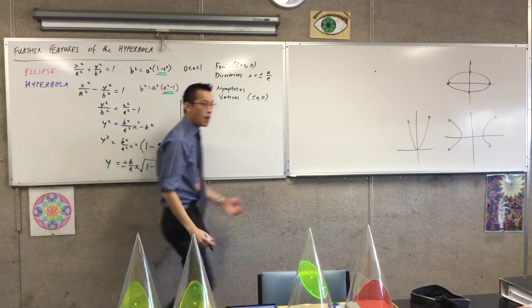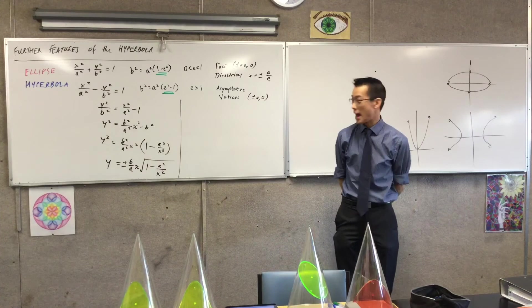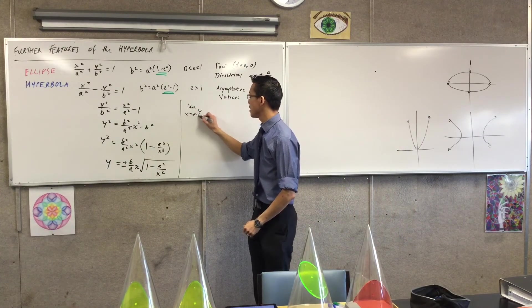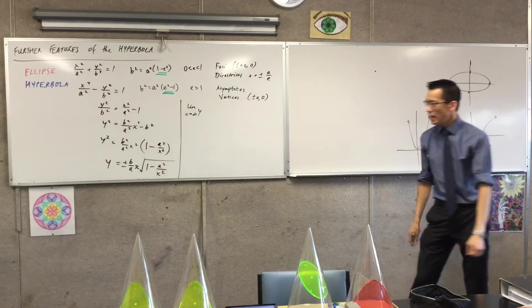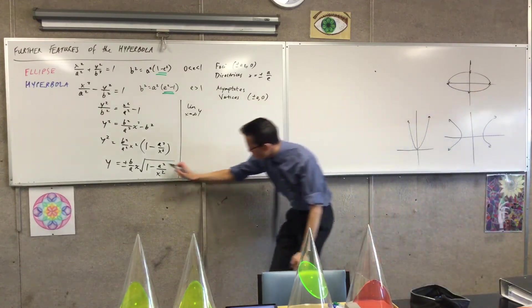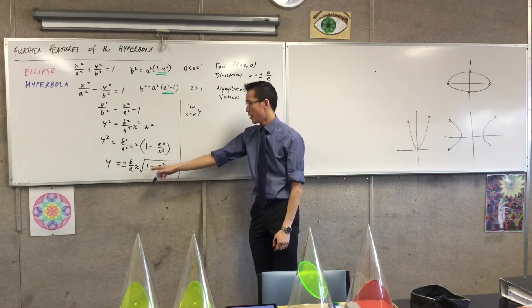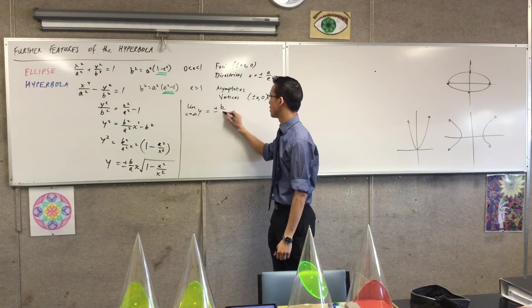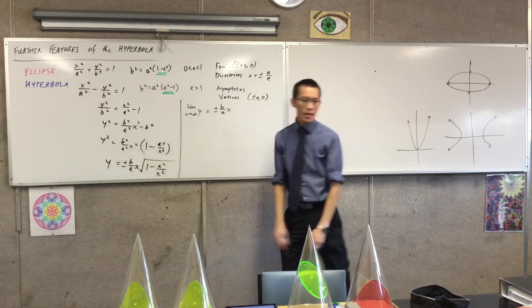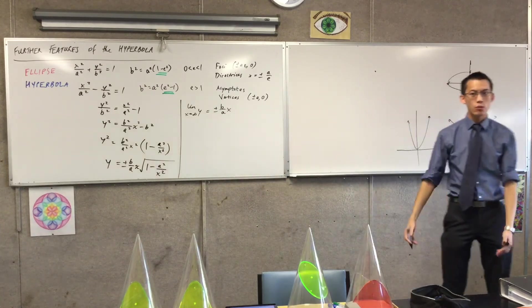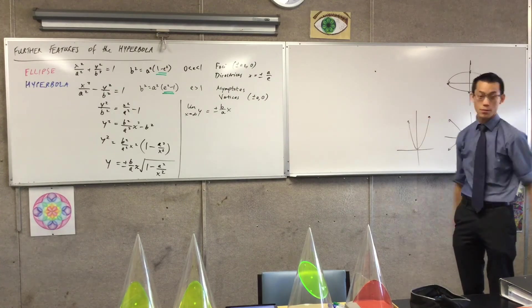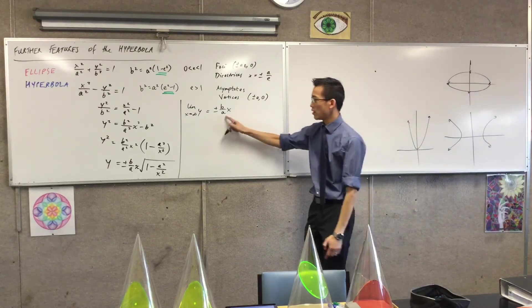And then you've got this guy left under the square root, okay? I've just run out of space unfortunately. But now I can get my limiting behavior happening, right? Because when I take the limit as x approaches infinity, right, you can see this term vanishes away and you just get one underneath the square root, so that leaves you with this.